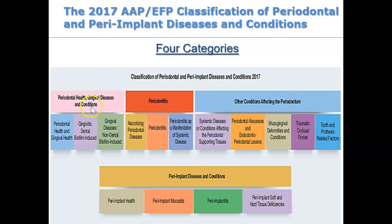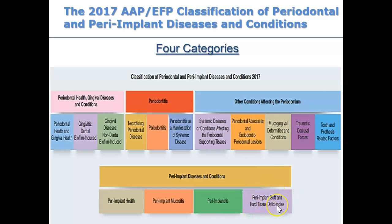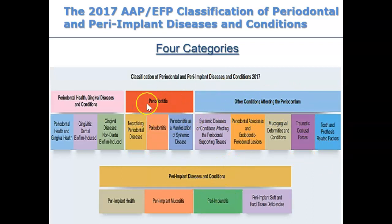You might be in the category where you have other conditions affecting the mouth — so you could have an abscess. On top of your health condition or gingivitis, you could have these additional conditions. And if you have an implant, the tissues around it could be healthy, could be inflamed with no bone loss, or there could be bone loss in that area, among many other things. You don't necessarily have to have only one category — you could have periodontitis along with peri-implant disease along with another condition, so three boxes could be checked for one person.